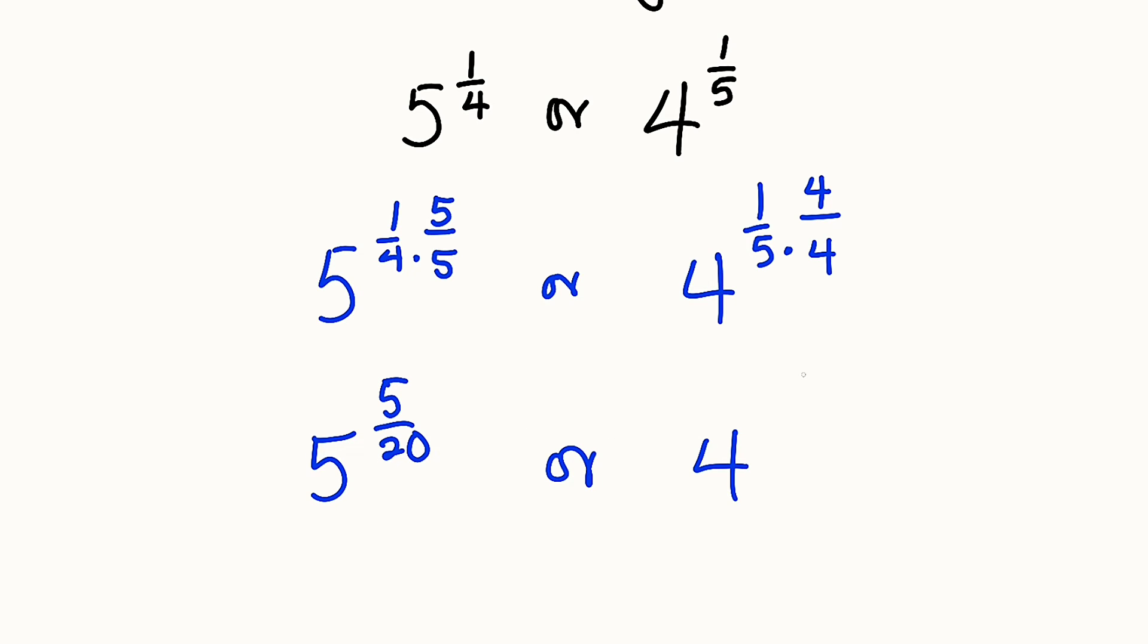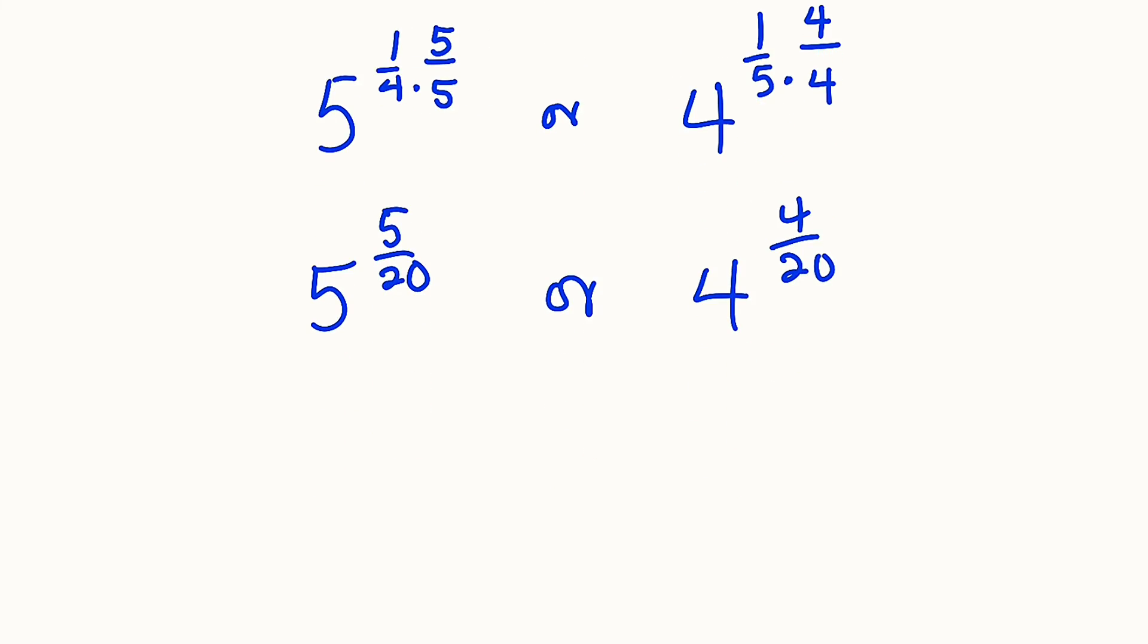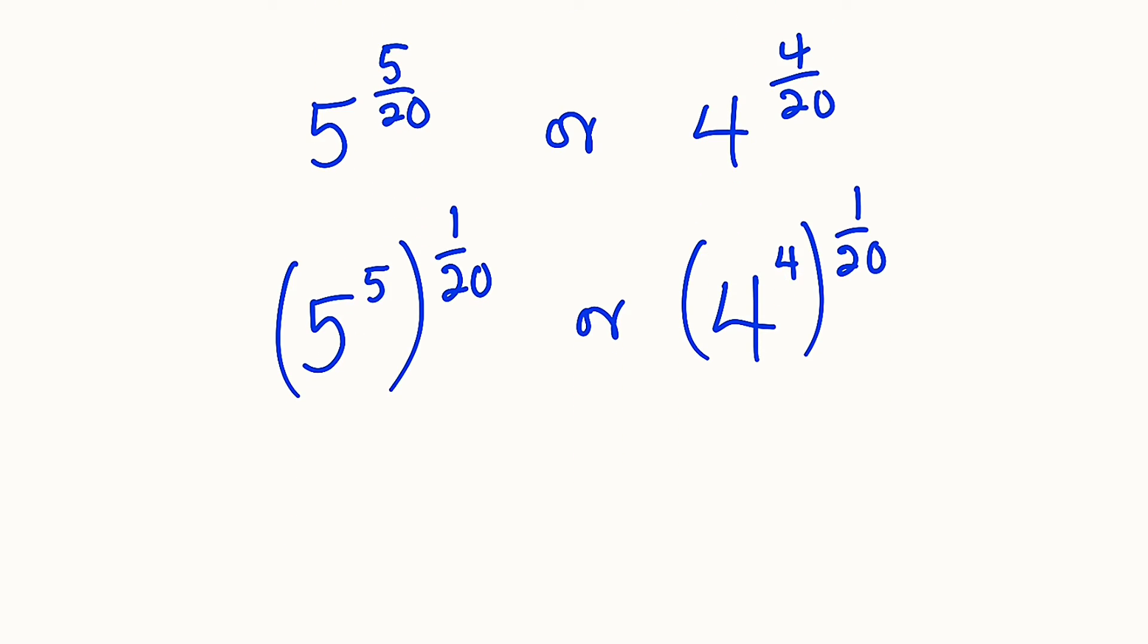Or 4 to the power of 4 over 20. This can be written as 5 power of 5 raised to the power of 1 over 20, or 4 power of 4 raised to the power of 1 over 20. Now you can see that the exponents are exactly the same. What we need to find out is whether 5 power of 5 is greater than 4 power of 4 or otherwise.